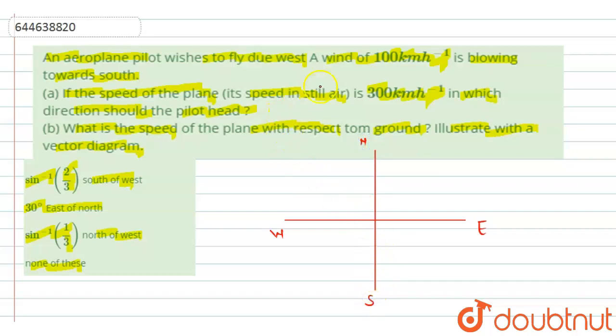So in the given question, the wind is blowing 100 km south. So this is the direction of the wind here. So this is velocity of wind, VW vector.